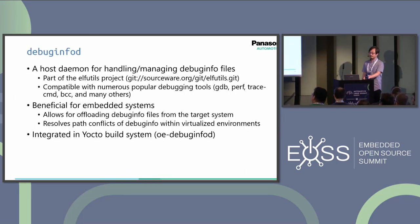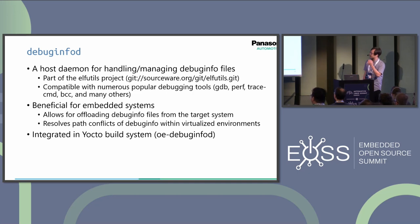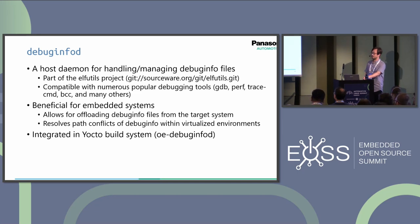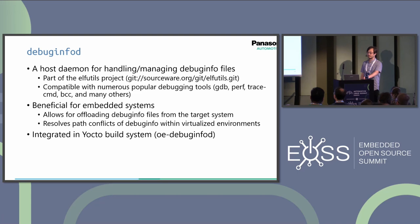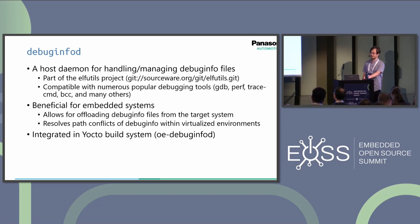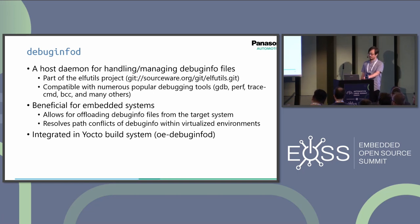The last tool is DebugInfoD, which is a bit different type of tool than the others I mentioned. It's a host daemon for handling and managing debug info files. DebugInfoD is developed as part of the elfutils project, and it's compatible with numerous popular debugging tools including GDB, Perf, TraceCommand, BCC, and many others. DebugInfoD is especially beneficial for embedded systems, as it allows for offloading debug info files from the target system, which solves storage limitations. Additionally, DebugInfoD resolves path conflicts of debug info files within virtualized systems, and a big advantage is its seamless integration with the Yocto build system, which enables you to utilize it with a single command.